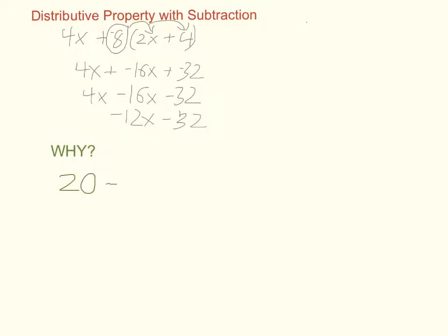Suppose I have 20 minus 3 times 4 plus 1. The order of operations tells me that I add inside the parentheses first, so that gives me 5. Then after parentheses will become multiplication in this case. So I'm going to do 20 minus 3 times 5. 3 times 5 is 15. So this is 20 minus 15, or 5.